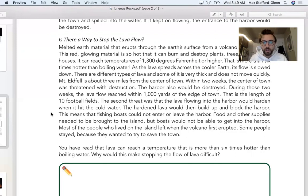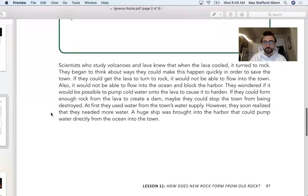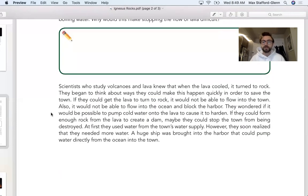The harbor is where ships come in to deliver. It's like usually a port. The hardened lava would then build up and block the harbor. This means that fishing boats could not enter or leave the harbor. Food and other supplies needed to be brought to the island, but boats would not be able to get into the harbor. Most of the people who lived on the island left when the volcano first erupted. Some people stayed because they wanted to save the town.